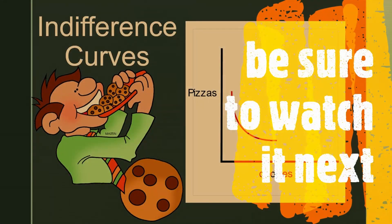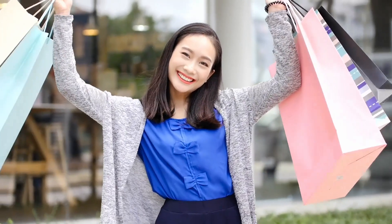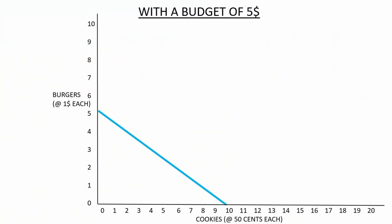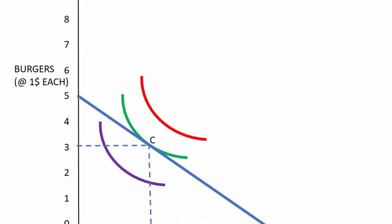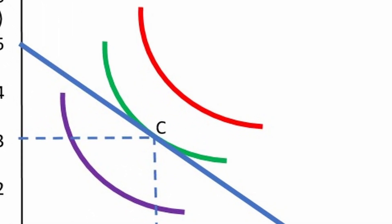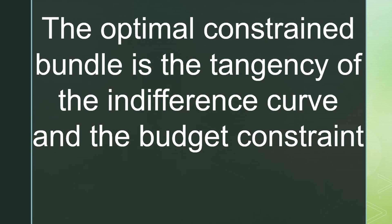In our last video we looked at indifference curves — I'm just as happy with this combination of burgers and cookies as I am with this — and we saw one graph can show several indifference curves: an indifference map. To show which choice brings the most utility to the consumer, we draw their budget constraint and their indifference curves on the same graph. We can see that point C is the furthest out indifference curve we can achieve while still meeting our budget constraint. This is the best choice we can make.